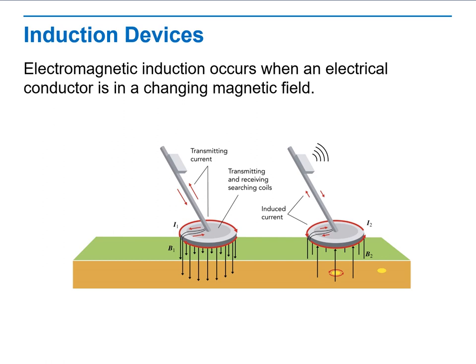Metal detectors, on the other hand, are also induction devices. Detectors produce a current that generates an electromagnetic field. When the electromagnetic field passes over a metallic object, the object is energized and produces an eddy current that then produces its own electromagnetic field, causing an induced current in the detector.